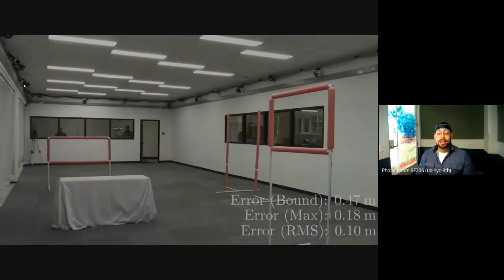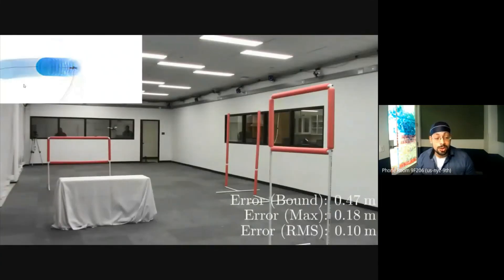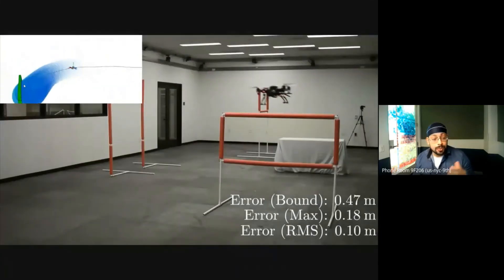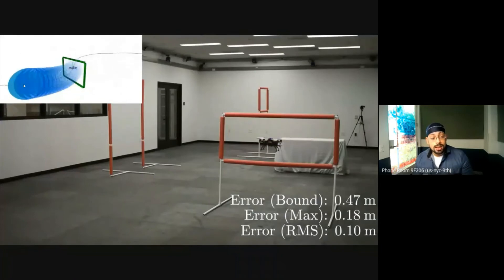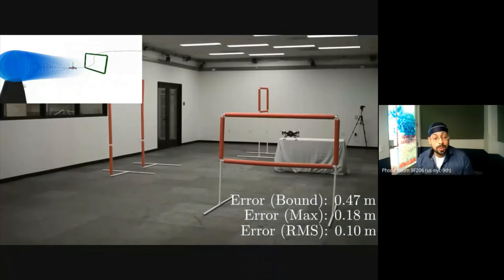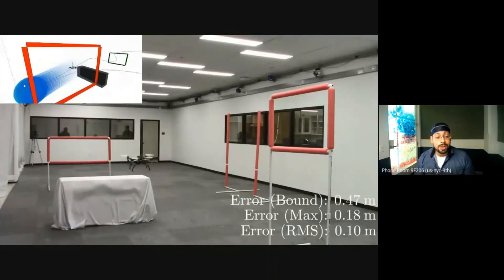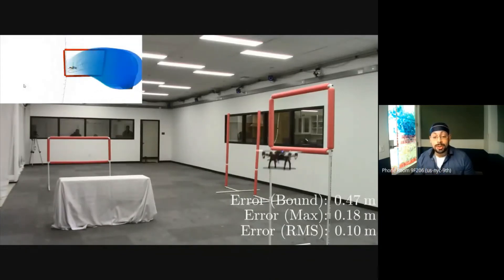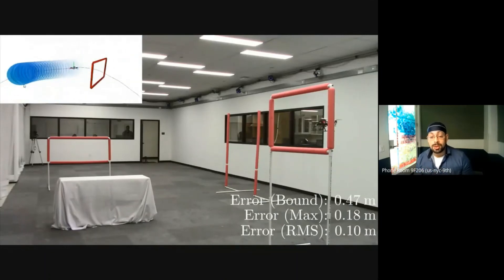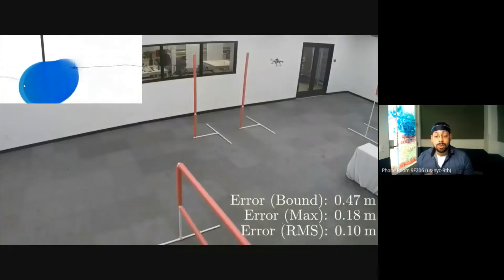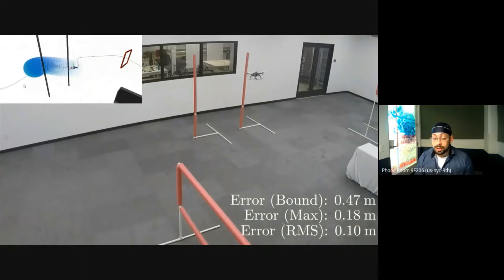So as an example, here is the entire methodology working on a quadrotor system. And what I'm showing here is a depiction of the forward motion plan as well as the tube margin that was used for inflation of the obstacles. And therefore, as long as the tube is free of the obstacles and we're using the feedback controller derived from the contraction results, we're guaranteed that the quadrotor will also be collision-free.